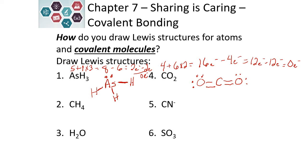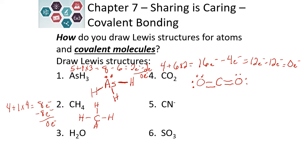Pause the video and see if you can complete the Lewis structures for the final 4 compounds. For methane, carbon has 4 electrons, and each of the 4 hydrogens has 1 electron, giving a total of 8 electrons. Carbon goes in the center because hydrogen only wants 2 electrons. We draw the hydrogens around the carbon connected with single bonds, which uses all 8 electrons. Hydrogen is happy with 2 electrons, and carbon has a complete octet with the 4 single bonds it forms.